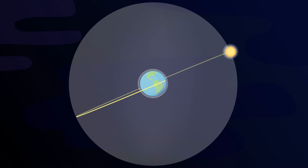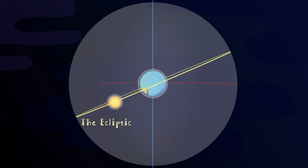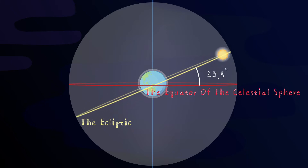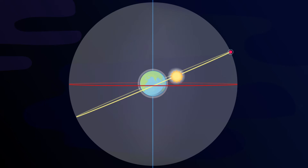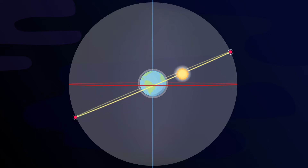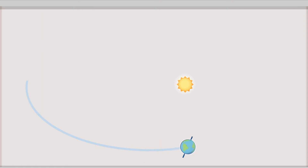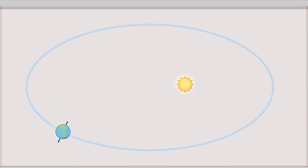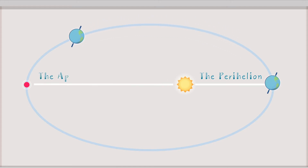The ecliptic is the path of the sun's annual motion along the celestial sphere. The ecliptic is tilted at a 23.5 degree angle compared to the equator of the celestial sphere. The point on the ecliptic with the highest declination is called the summer solstice point, and the point with the lowest declination is called the winter solstice point. The earth's revolution around the sun forms an oval that is almost a circle. On the earth's orbit of revolution, the point closest to the sun is called the perihelion, and the point farthest from the sun is called the aphelion.